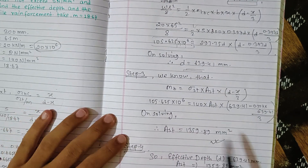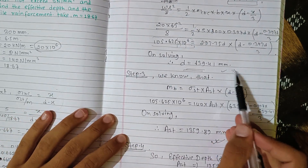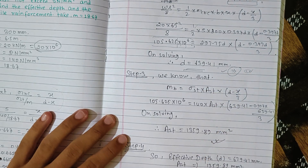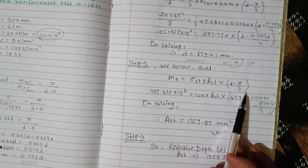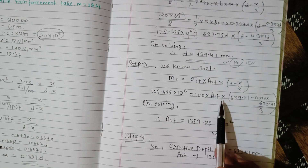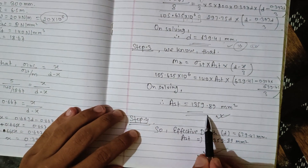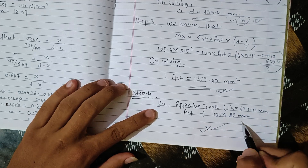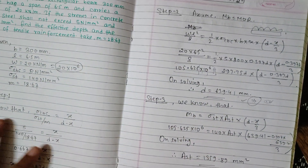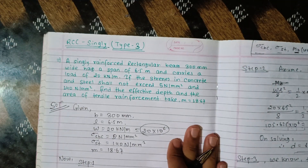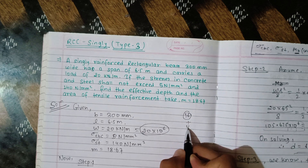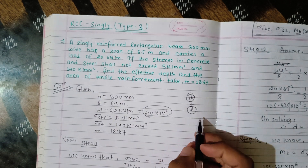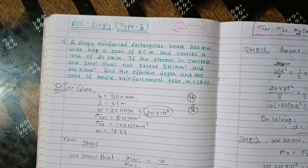This is basically a 10-mark question. We know that mb = sigma_st × AST × (d − x/3), and putting in x we solve for AST and d. We have seen Type 1, Type 2, and Type 3 design. I have to go to the next video so you can see all three types in the playlist.